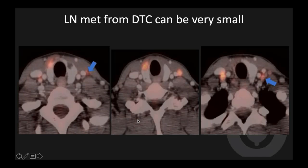A few words about lymph node metastasis from differentiated thyroid cancer: these can be very, very small. On FDG PET, there can be abnormal uptake in lymph nodes not even 5 mm or 7 mm in size. Do not use the 1 cm size cutoff you may use for squamous cell carcinoma of the head and neck — that doesn't work for thyroid cancer.